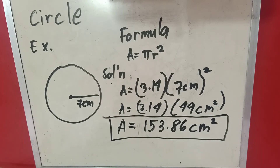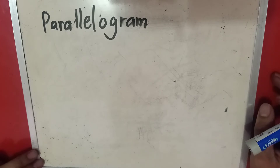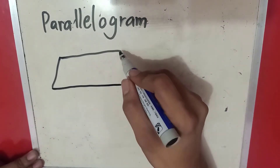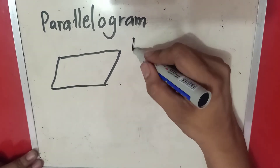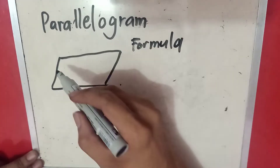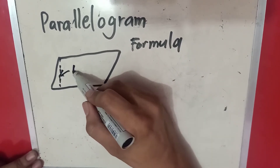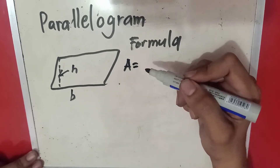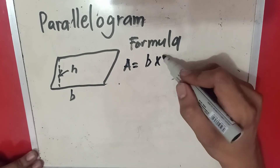Now let's proceed to another geometric figure, which is the parallelogram. A parallelogram is almost the same as a rectangle. The formula to find the area of a parallelogram is: area equals base times height. A parallelogram has a base and a height, so the formula is base times height.